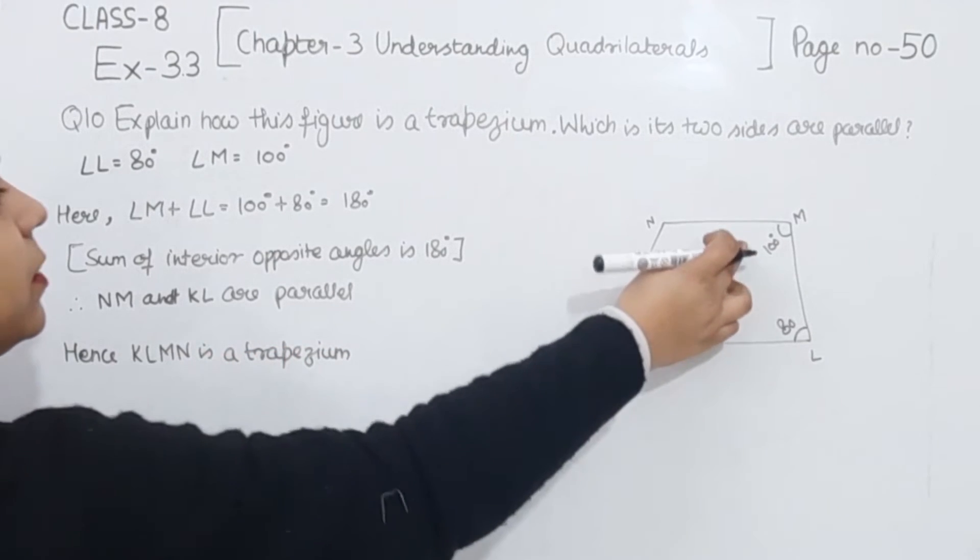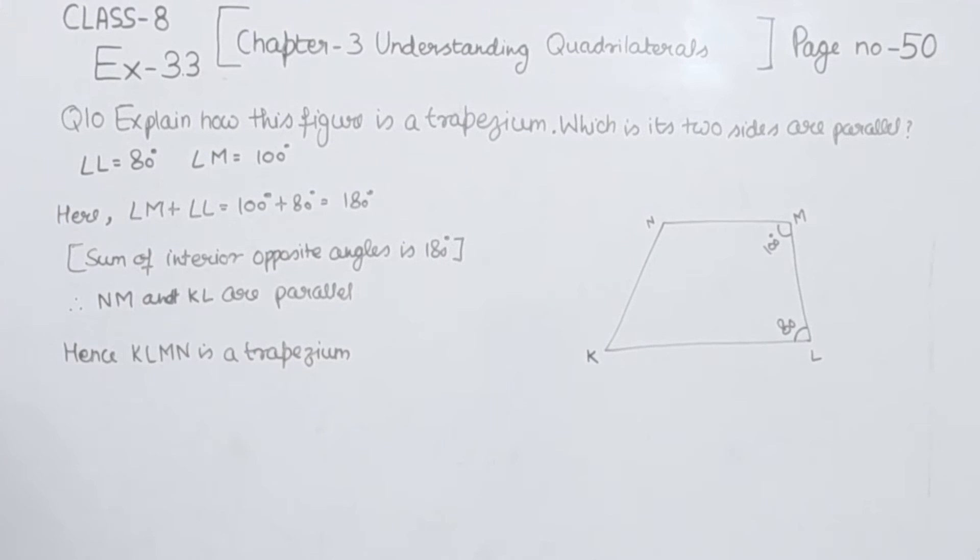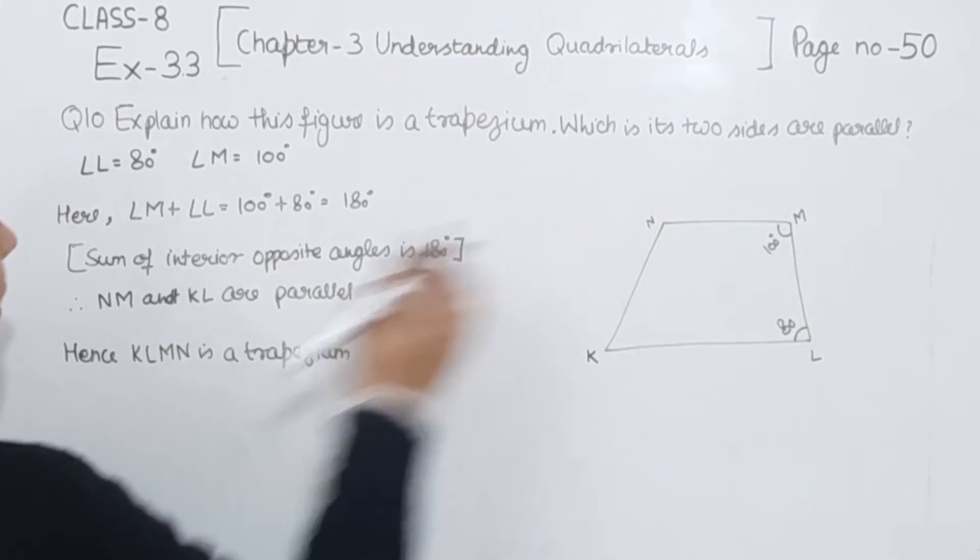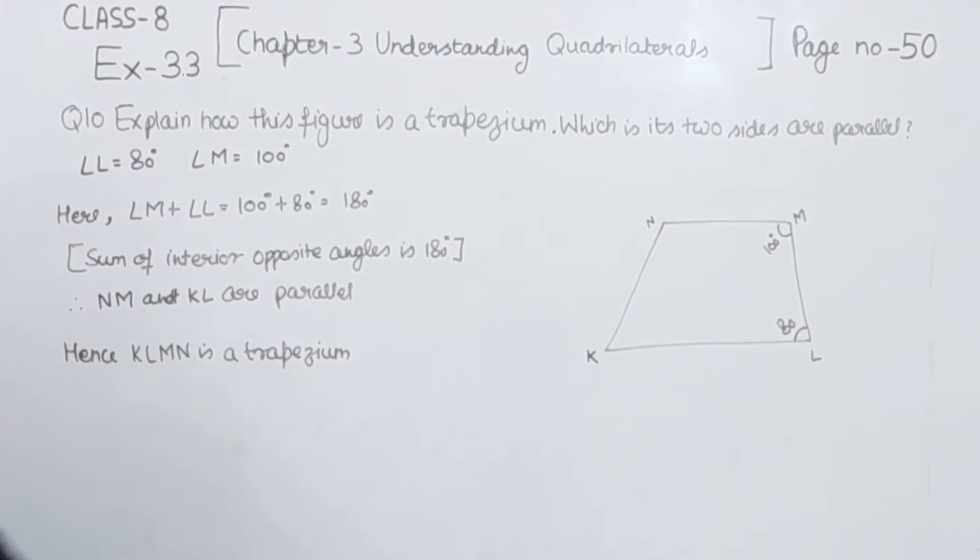In this one they both are the interior opposite angles and they are equal to 180 degrees and NM and KL are parallel to each other. And in the trapezium two sides of the trapezium are parallel to each other. So hence it is a trapezium.